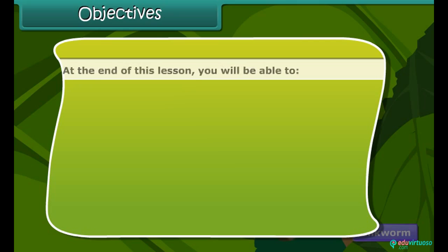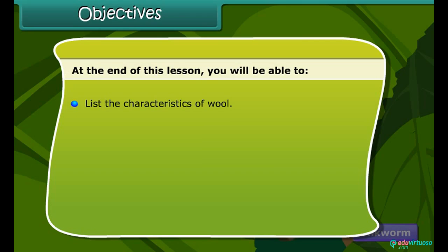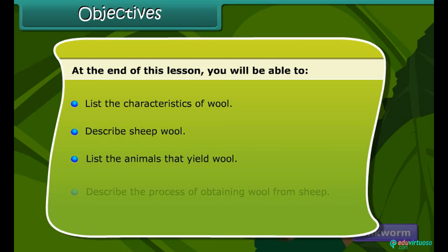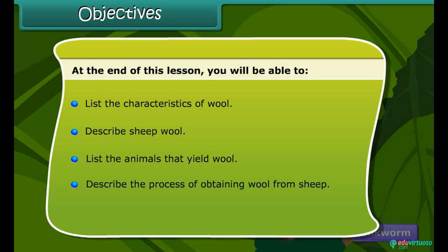Objectives: At the end of this lesson, you will be able to list the characteristics of wool, describe sheep wool, list the animals that yield wool, describe the process of obtaining wool from sheep, and explain the processing of fibers into wool.